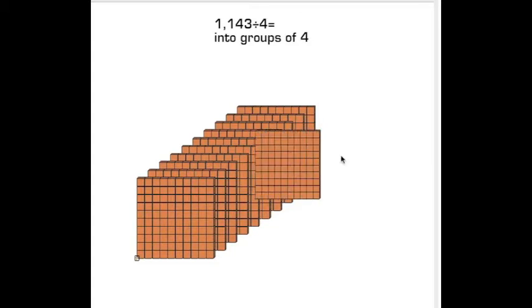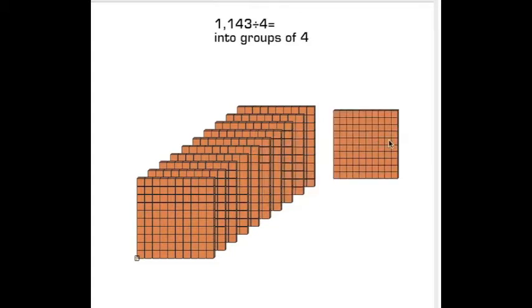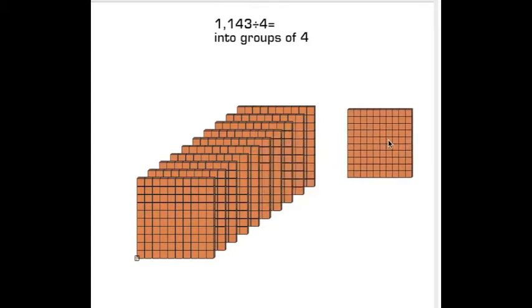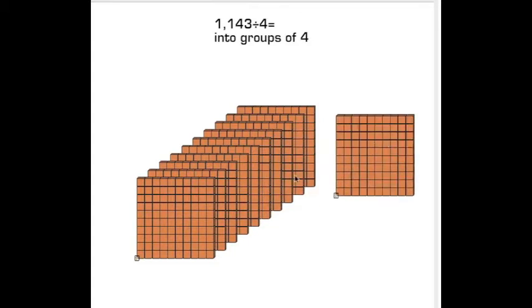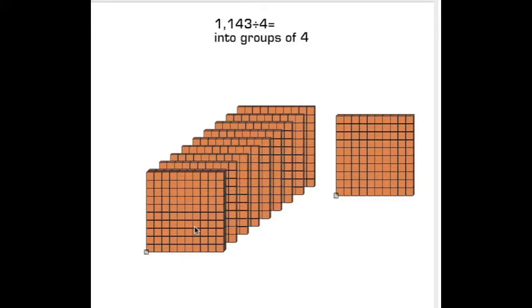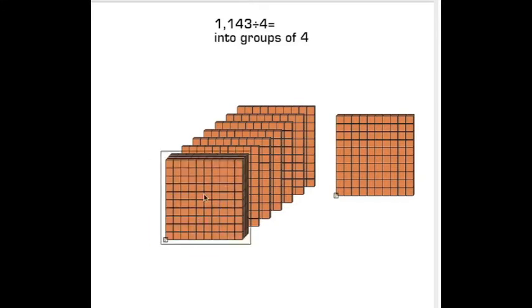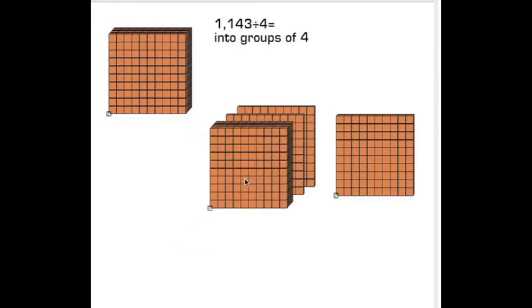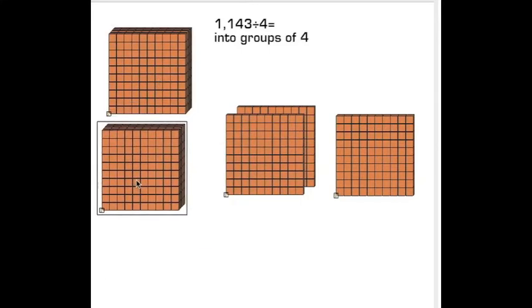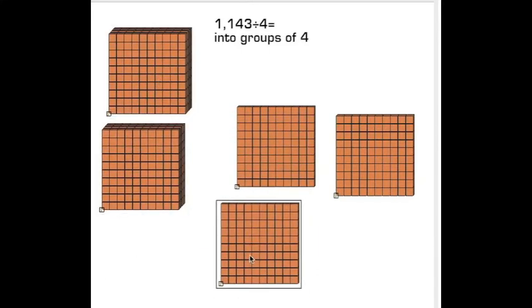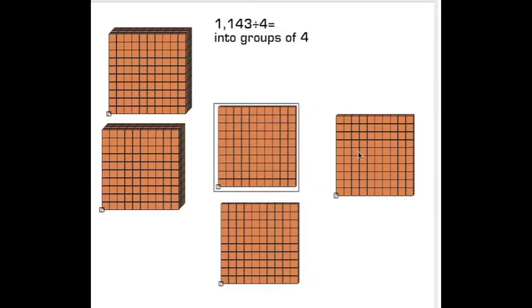I also have to add the other 100 I already had. Now I have 11 hundreds. I'll put these into groups of 4. Now I have 2 groups of 4 with 3 hundreds remaining.